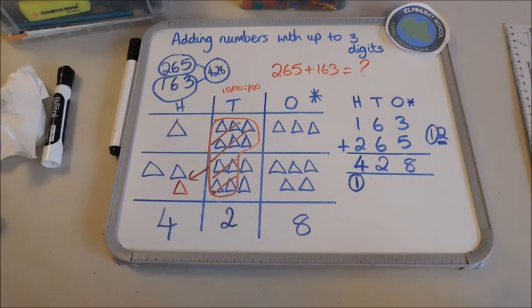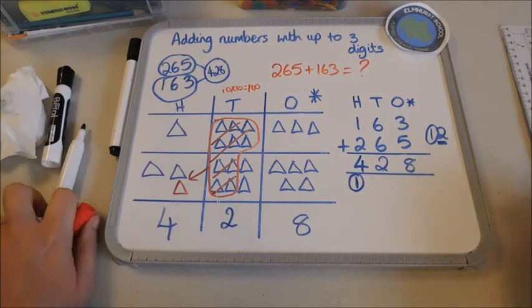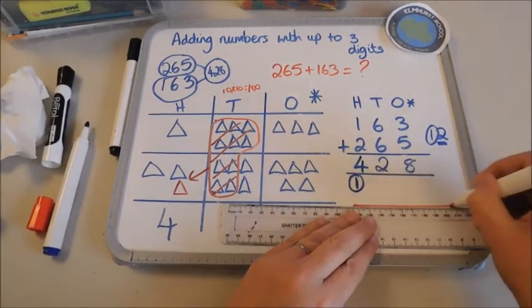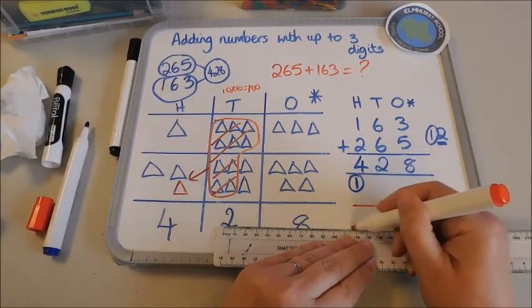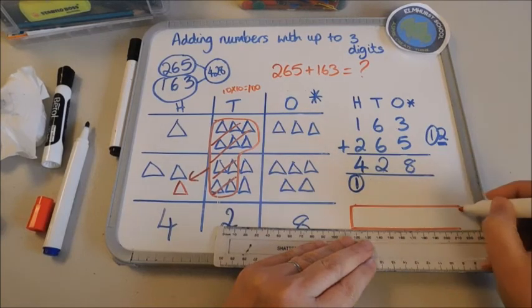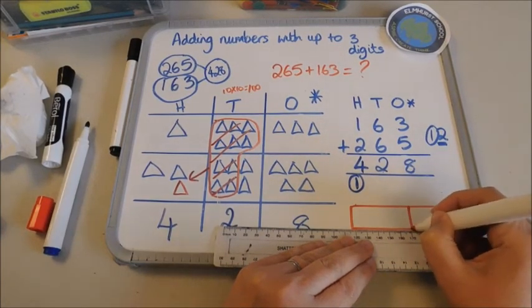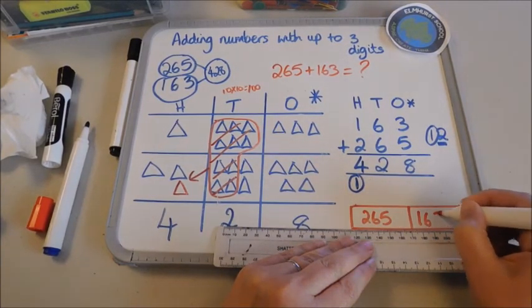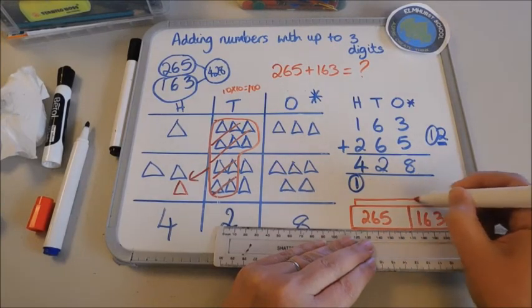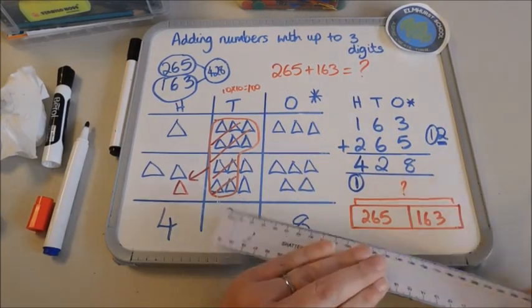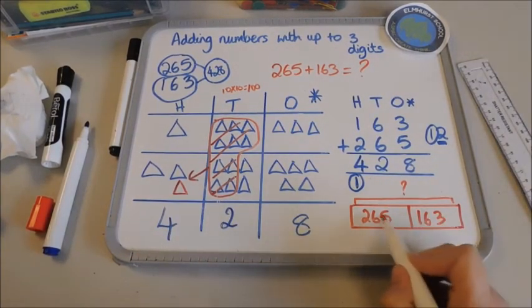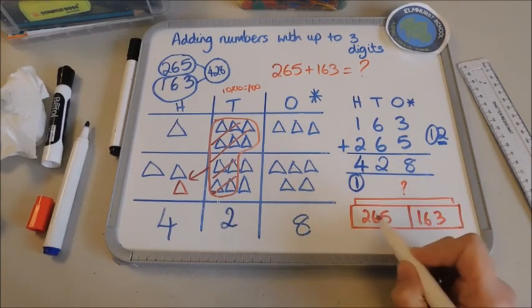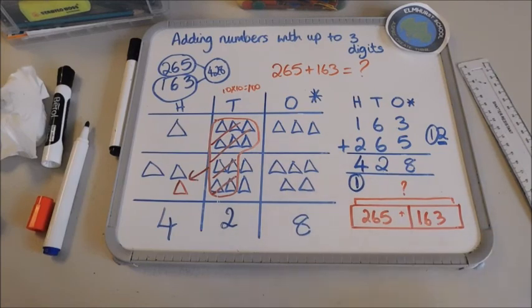The other way that the children might see the calculation written is in a part whole model which might look like this. You would have your number, one of the numbers on one side, the other number on the other, and then it would have a bracket with a question mark. And that would basically tell the children that these two parts need to make a whole. The bracket is showing the whole, what is the whole. So to get the whole we would add those two sides up.